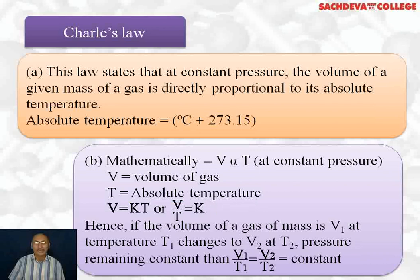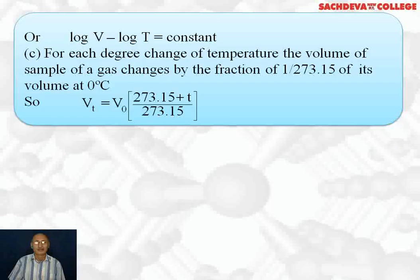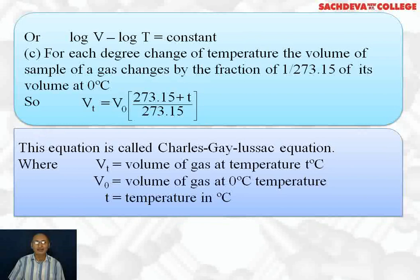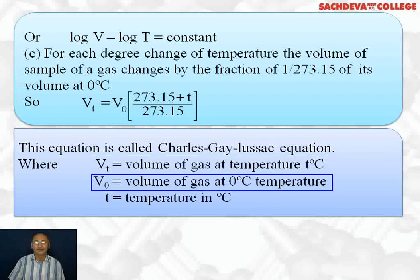Hence, if the volume of a given mass of gas is V1 at temperature T1, and changes to V2 at temperature T2 (pressure remaining constant), the formula becomes V1/T1 = V2/T2 = constant. Also, log V minus log T equals a constant. For each degree change in temperature, the volume changes by a fraction of 1/273.15 of its volume at 0°C. The equation is: Vt = V0 × (273.15 + T°C) / 273.15. This is called Charles-Lussac's equation, where Vt is volume at T°C, V0 is volume at 0°C, and T is temperature in centigrade.